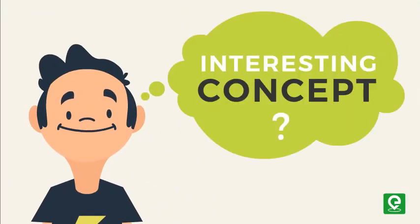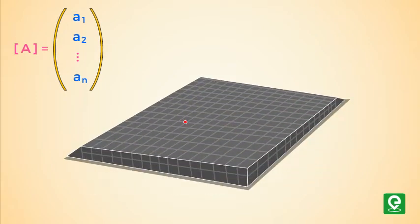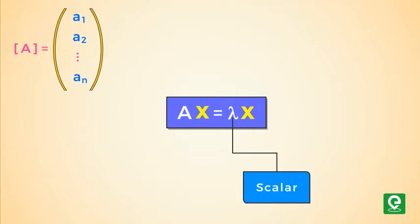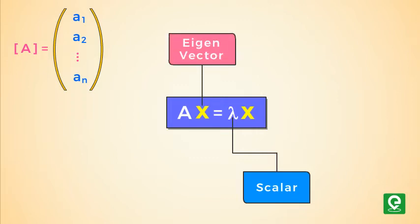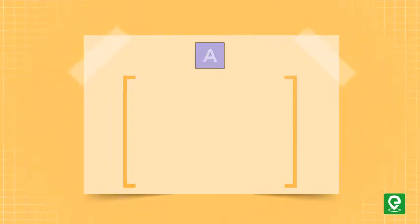Let A be a linear transformation represented by a matrix A. If there is a non-null vector x in the real plane such that A multiplied by x is equal to lambda x for some scalar lambda, then lambda is called the eigenvalue of A with corresponding eigenvector x. The decomposition of this square matrix A into eigenvalues and eigenvectors is known as the eigen decomposition theorem.